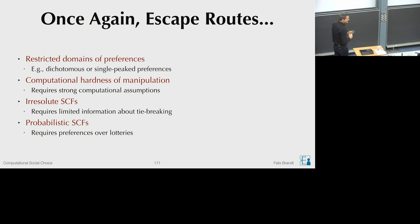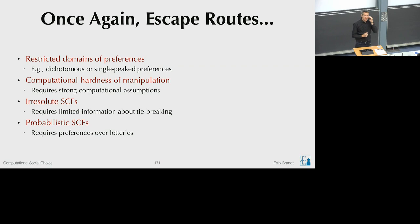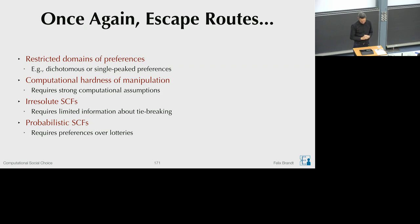Welcome to today's lecture in Computational Social Choice. We are slowly approaching the end of the semester. The negative results from last week—the Gibbard-Satterthwaite impossibility and the no-show paradox—were two negative results for resolute social choice functions. Just as with the Arrovian impossibilities studied at the beginning of this course, this opens many avenues to potentially circumvent these negative results by making minor adjustments to the model. Each of the possibilities listed on the slide leads to an entire part of the literature in social choice.